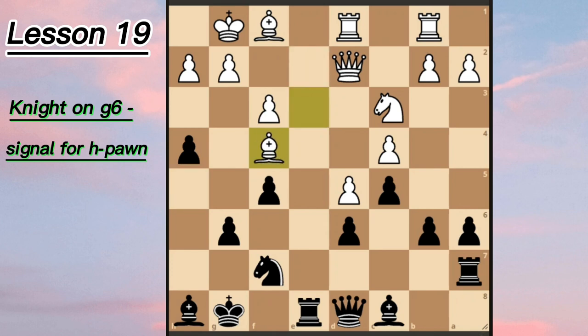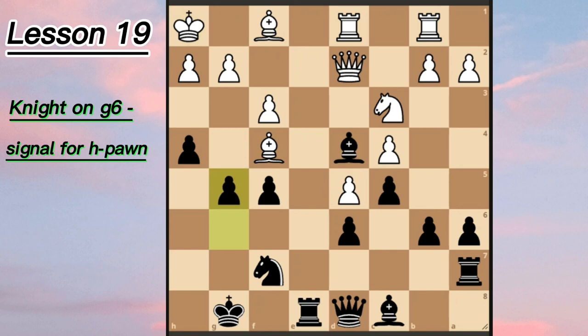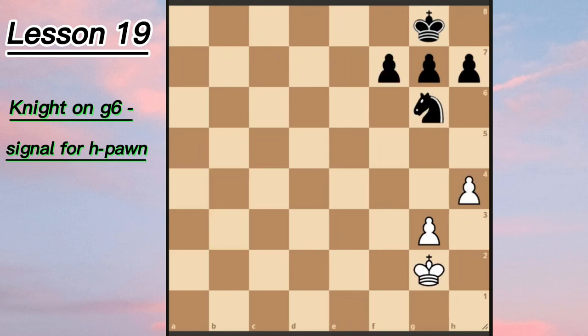Then White blundered with knight f4. After the check, king h1, and then g5, it turned out that White is losing a piece — losing their bishop. That's why White resigned: they are simply losing material.